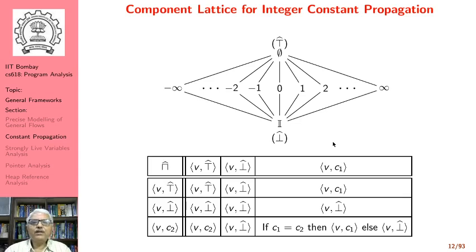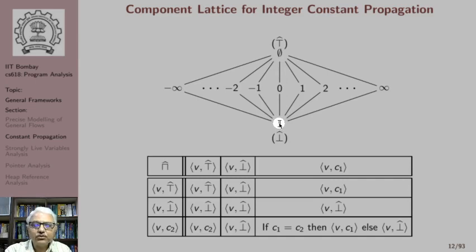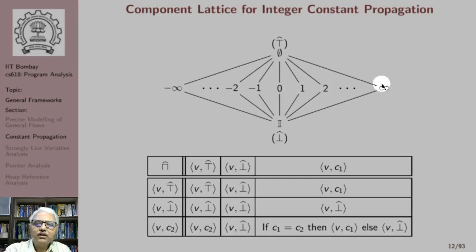The component lattice for integer constant propagation looks like this. This represents the empty set and this represents the entire universal set. We should be using Z for the entire set of integers, and otherwise we have just individual constants in the middle. This is the lattice that we have seen before.